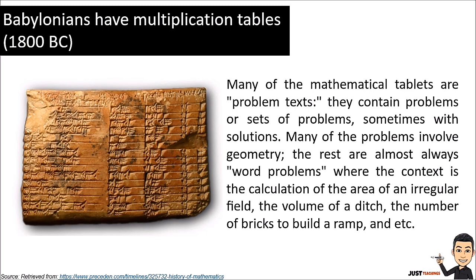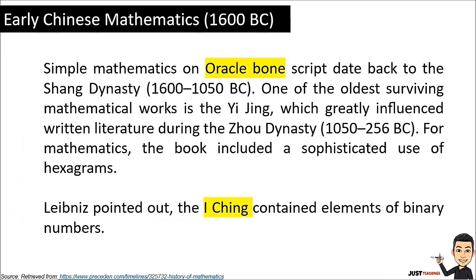Here we can see on this tablet the multiplication tables of the Babylonians. Now let's proceed to early Chinese mathematics from 1600 BC. Simple mathematics on oracle bones date back to the Shang Dynasty. One of the oldest surviving mathematical works is the Yijing, which greatly influenced written literature during the Zhou Dynasty. For mathematics, the book included a sophisticated use of hexagrams.